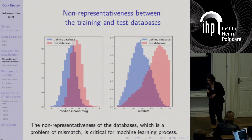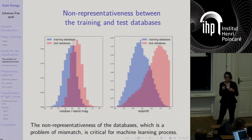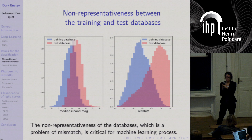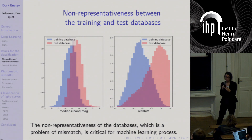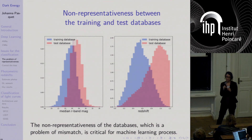The training database contains objects for which you know the truth — for example labeled photographs of cats or dogs given to the algorithm. In the test database you don't have the truth or labels because in astronomy you cannot perform spectroscopy to very faint magnitudes. The validation dataset is in fact a part of the training database selected to analyze the performance of the algorithm — you have the truth but it is just to see if you need to add more layers, to test your algorithm.